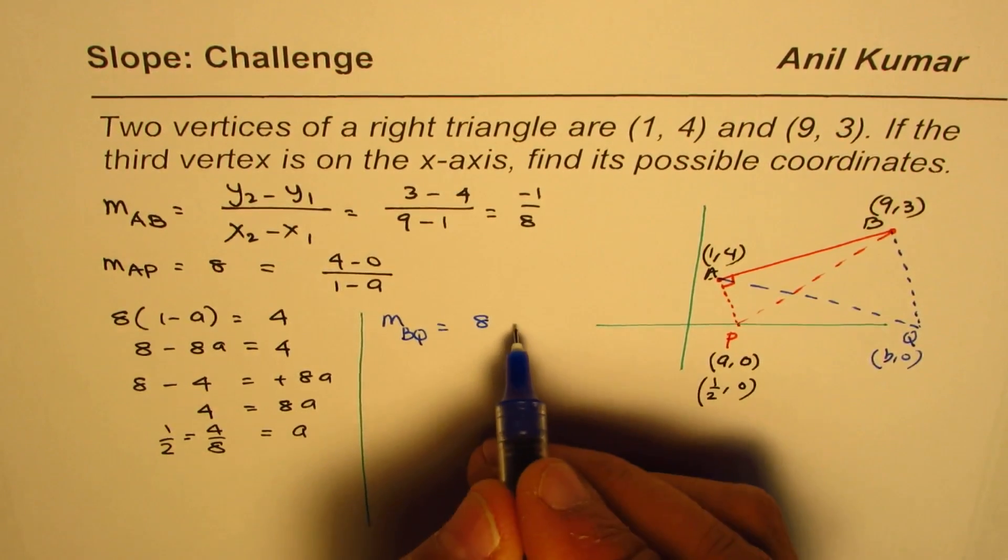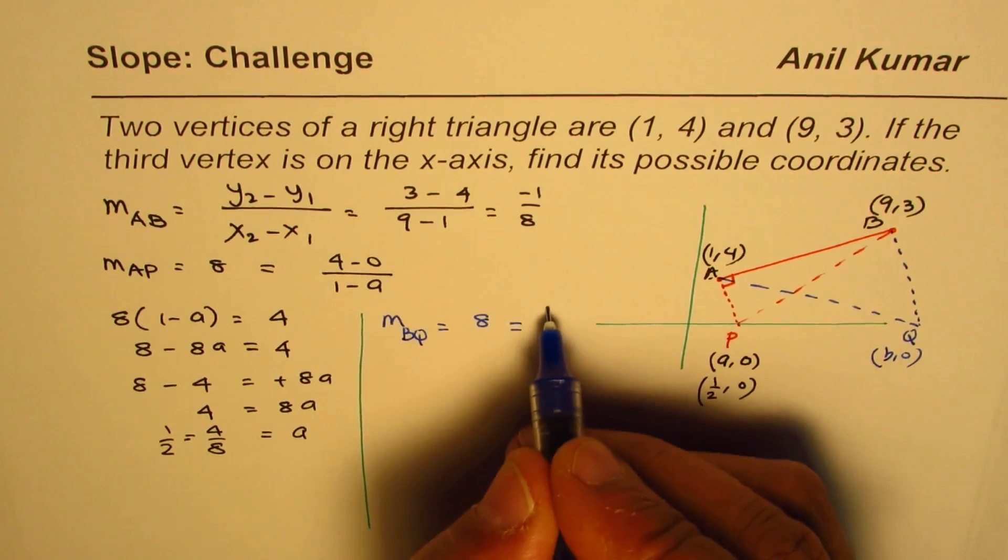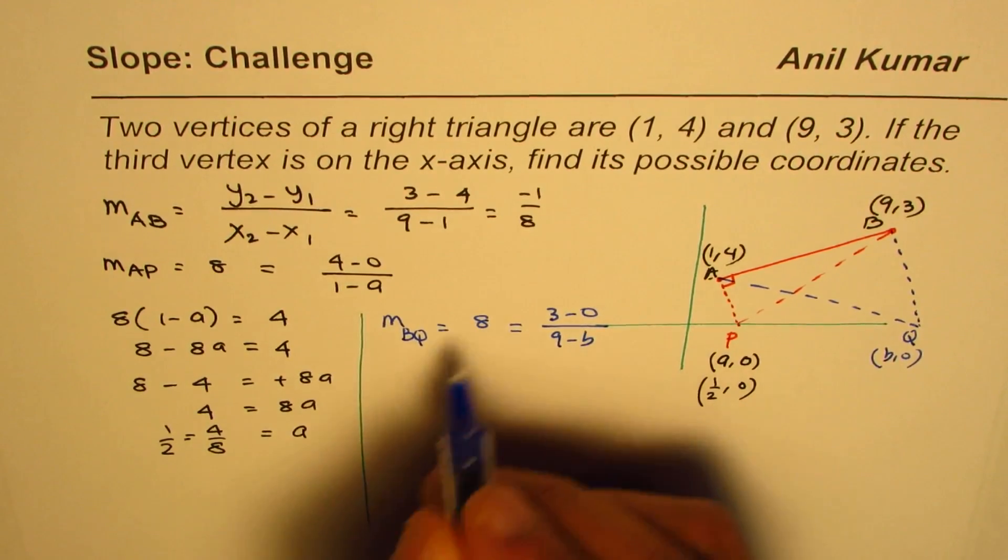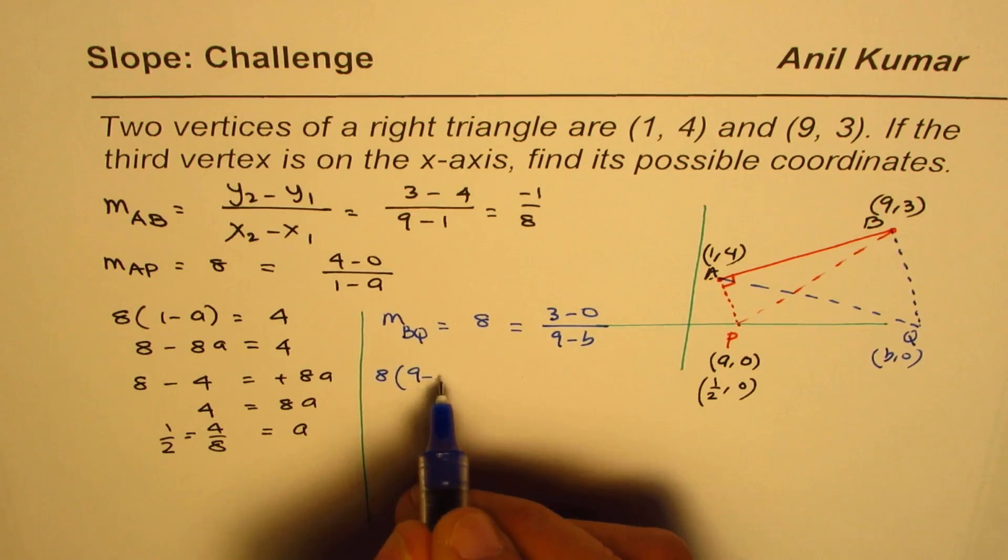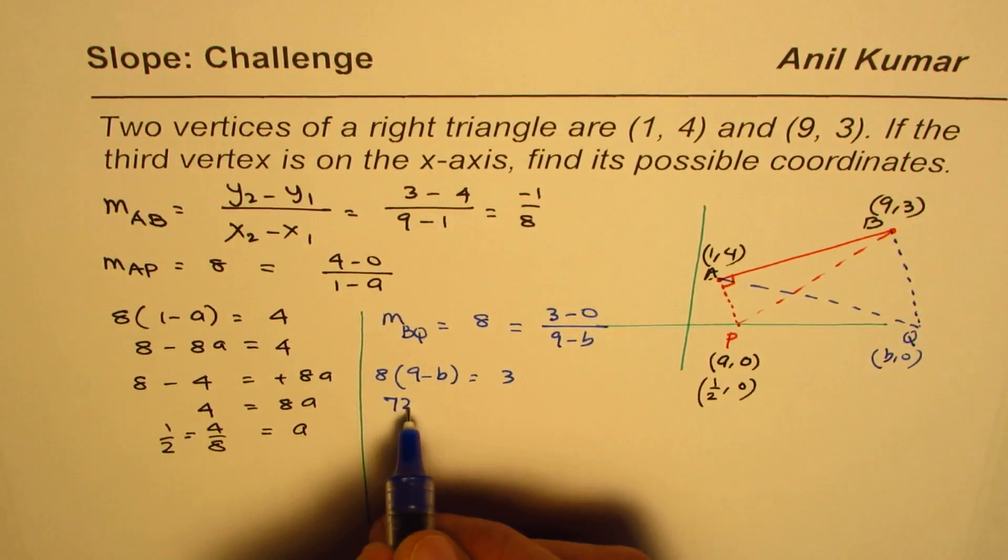Now as you know, BQ slope, if I'm taking this as (b, 0), will be (3 - 0)/(9 - b). Cross multiply: 8 times (9 - b) equals 3. 8 times 9 is 72, so 72 - 8b equals 3.